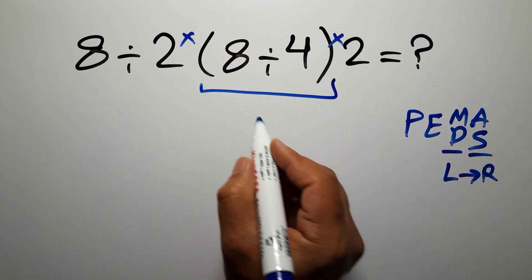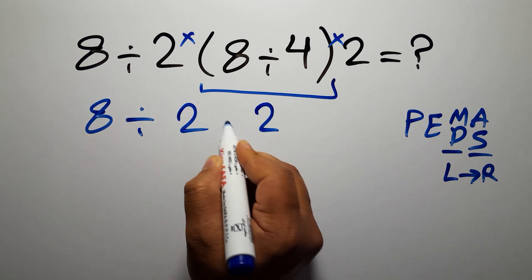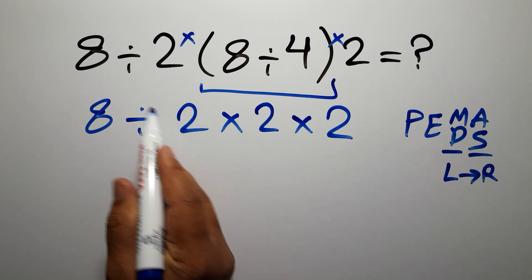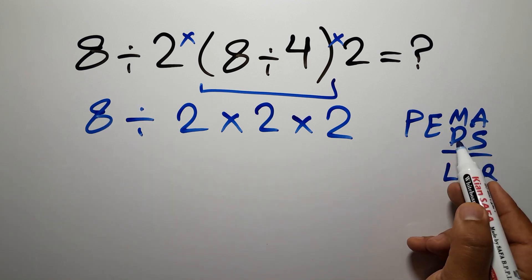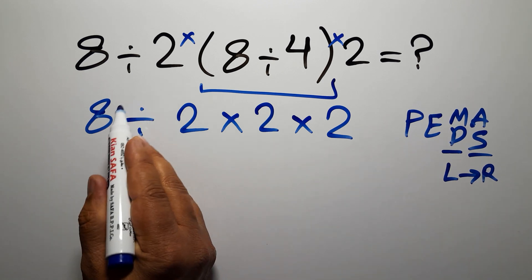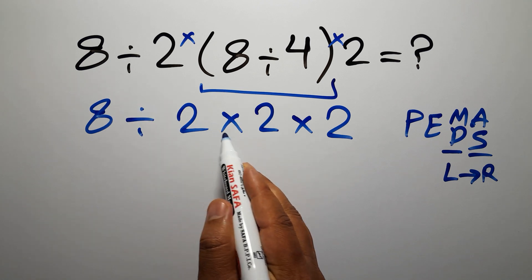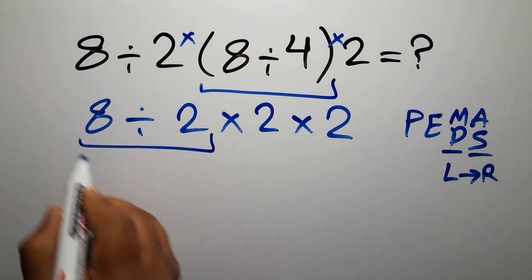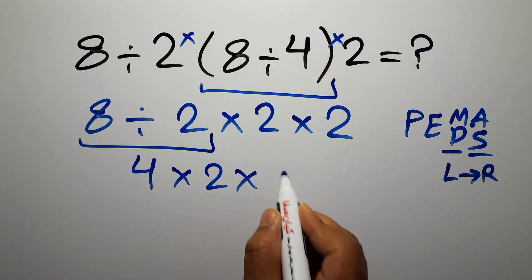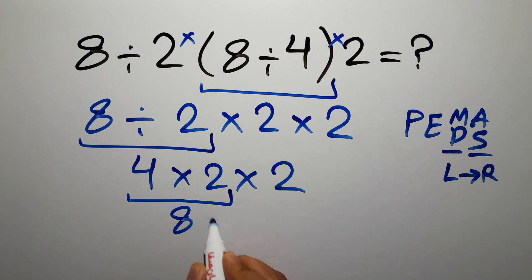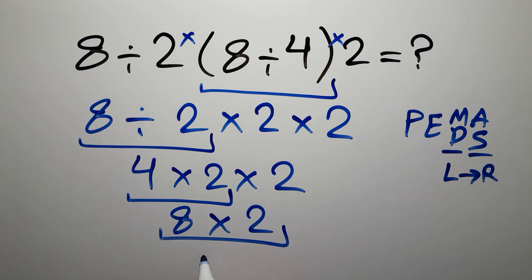8 divided by 4 gives us 2, so we have 8 divided by 2 times 2, and again times 2. Now we have to do this division, because multiplication and division have equal priority and we work from left to right — not this multiplication or this multiplication. 8 divided by 2 gives us 4, so 4 times 2 times 2 gives us 8, and 8 times 2 is 16. This is our final answer.